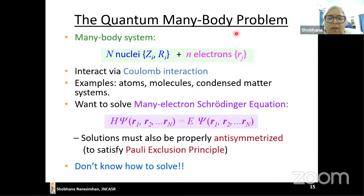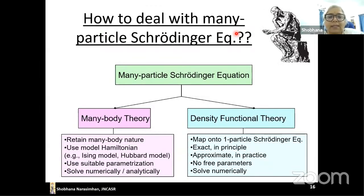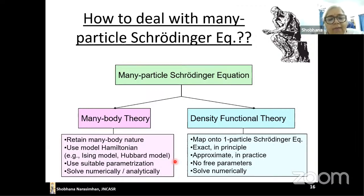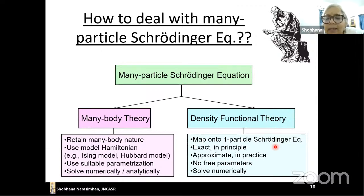We can write down this equation easily, but unfortunately we don't know how to solve it because it's a many-body equation. There are two broad approaches: many-body theory, which retains the many-body nature using model Hamiltonians like the Ising or Hubbard model; or, as people like me use, Density Functional Theory, where you map this many-particle equation onto a system of one-particle equations. This mapping is exact in principle but approximate in practice.